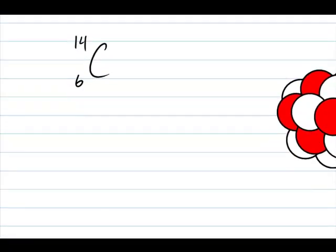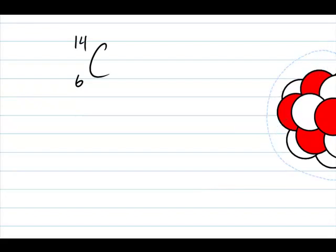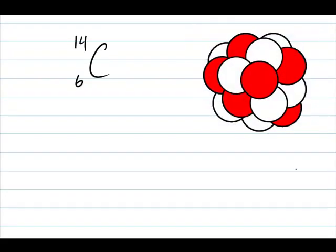Let's do another example. Here you have carbon-14. Here's a carbon-14 nucleus. Well, C is carbon. Z, the atomic number is what? It's going to be, here's Z, atomic number is 6.